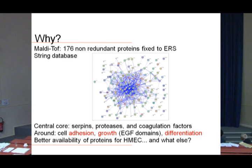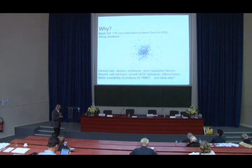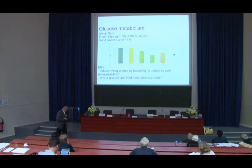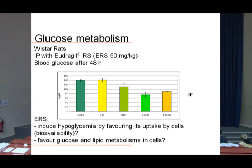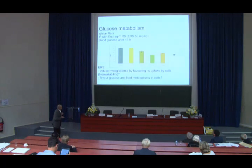We can imagine that there is better availability of these proteins for human mammary epithelial cells. Furthermore, very recent results from the Cairo group in Egypt show that when nanoparticles were injected intraperitoneally at 50 micrograms per kilo in Wistar rats, there was a reduction in blood glucose as early as 48 hours, lasting more than two or three weeks. So perhaps nanoparticles may induce reduced blood glucose by favoring uptake by cells and promoting glucose and lipid metabolism — that is a hypothesis.